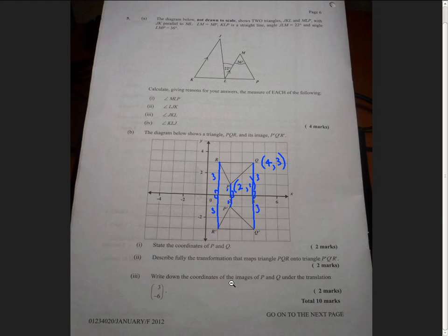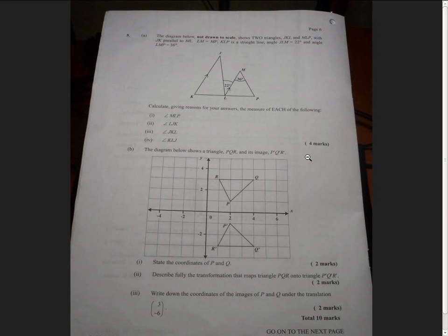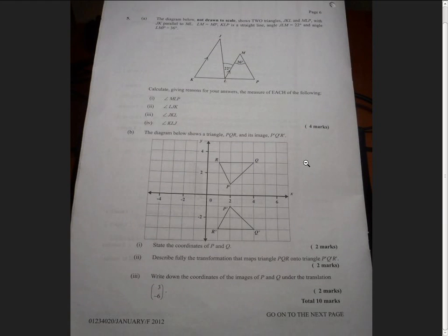Finally, we want to write down the coordinates of the images of P and Q under the translation (3, -6). Okay, so let's see if we have space to draw it here: 1, 2, 3, 4, 5, 6. I'm moving across 3: 1, 2, 3. The translation says move 3 units to the right and 6 units down. So that's 1, 2, 3 and 6 units down: 1, 2, 3, 4, 5, 6.